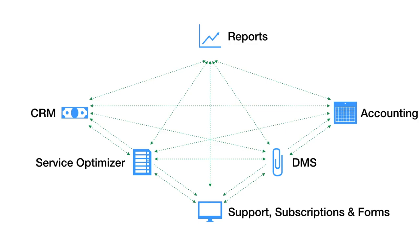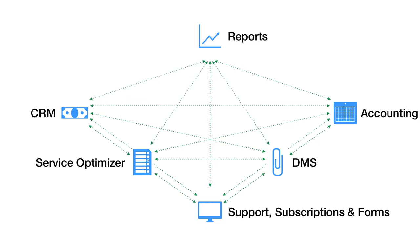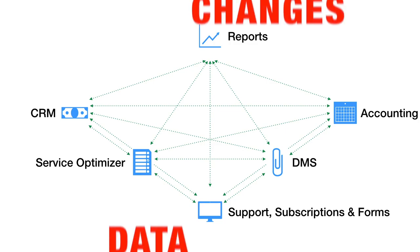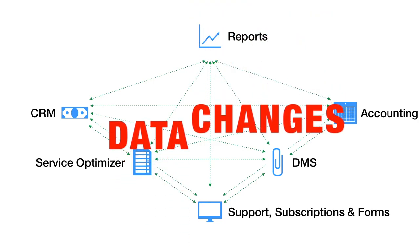When he wants analysis of his operations, he goes to others. If he wants to see the relationship between buyers and repeat customers, he has to go to still others, and so on. The problem here is that the data used for these reports is always changing.